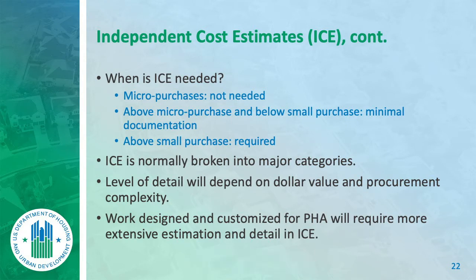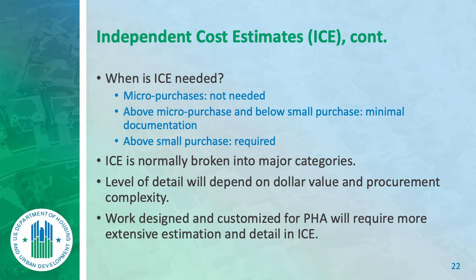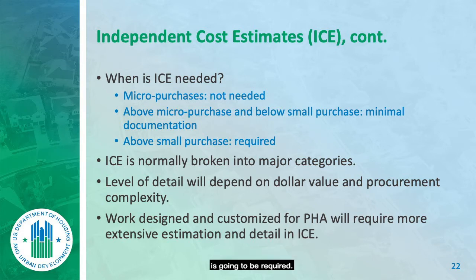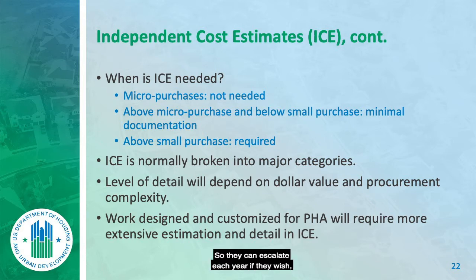Above the micro-purchase threshold but below the small purchase threshold of $60,000, only minimal documentation is required — though personally I do ICEs the same way for everything and attach any backup. Above the small purchase threshold, an ICE is absolutely required. For anything above $3,000 in New Mexico, it's required. ICEs can sometimes be broken into major categories by annual audit year, so costs can be escalated each year if needed.